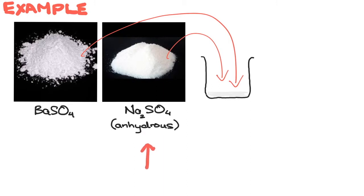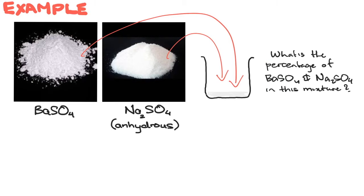Anhydrous means that it is free of moisture, because sodium sulfate loves to suck moisture from the air which will change its mass. This therefore means it's naturally soluble in water, but we want to know the percentage composition of this mixture.